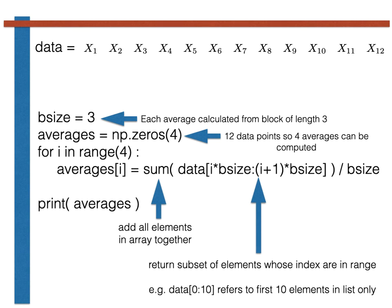This particular command tells me to sum all the elements from i times bsize up to, but not including, i plus 1 times bsize. The first time through the loop, this will be elements 0, 1, 2. The second time it will be elements 4, 5, and 6. The third time it will be 6, 7, and 8, and the final time it will be 9, 10, and 11. We will thus get the four block averages we require.